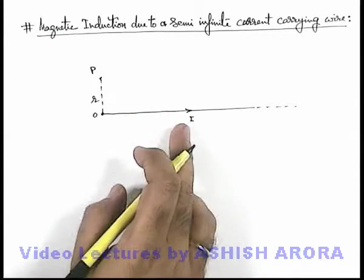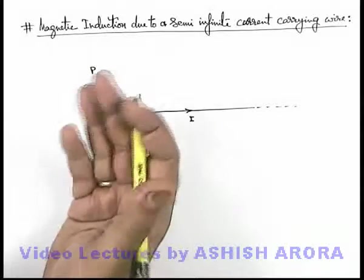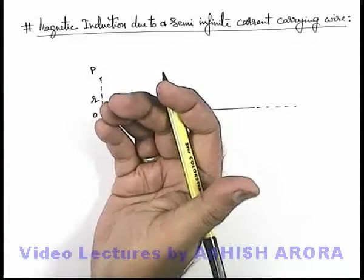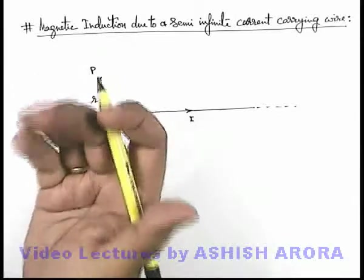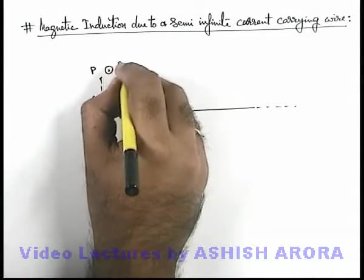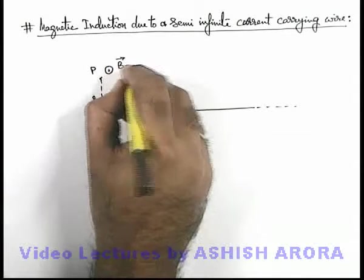Then certainly we can see by using right-hand thumb rule, magnetic induction at P will be in outward direction. Because if I place my thumb along the direction of current, curved fingers will point in outward direction. So here magnetic induction at P will be in outward direction.